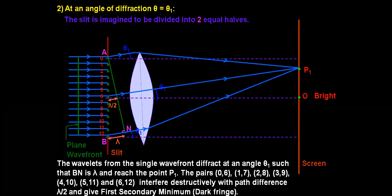To find the first secondary minima, divide the slit into two equal parts. Let D sin theta 1 equal lambda, so that the path difference between rays A and B is lambda, while the path difference between the halfway point and A is lambda by 2. We can say that for every point in the upper half there is a corresponding point in the lower half such that the rays from these points reach the screen with a path difference of lambda by 2. Hence these produce destructive interference, giving minima at that point — this is the first secondary minima.